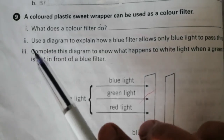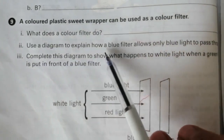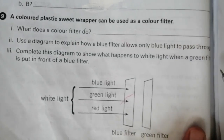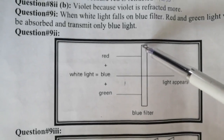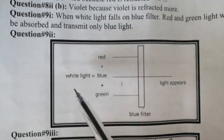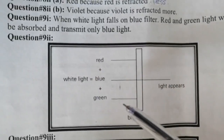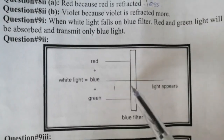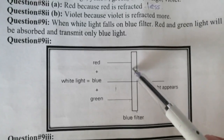Question number 9, part 2: use a diagram to explain how a blue filter allows only blue light to pass through. This is the diagram showing a blue filter. When white light — which is a combination of red, blue, and green — falls on the blue filter, the blue filter will allow only blue light to pass through it, and red and green light will be absorbed by the blue filter.